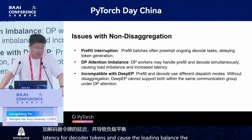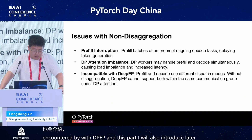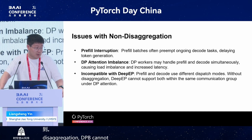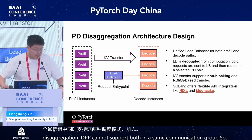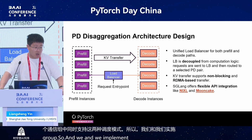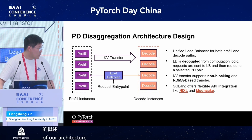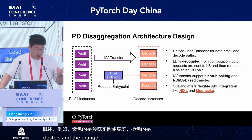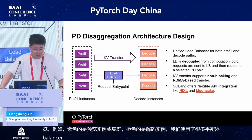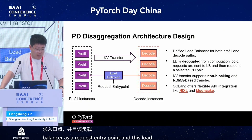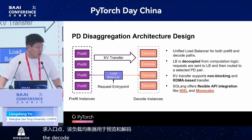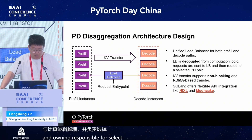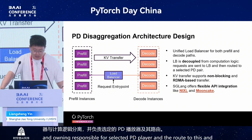A third issue is encountered with DP-EP. Prefill and decode usually use different dispatch modes, and without disaggregation, DP-EP cannot support both within the same communication group. In our PD disaggregation architecture, the purple nodes are prefilling instances and the orange ones are decoding instances. We use a load balancer as the request entry point for both prefill and decode paths. The LB is decoupled from computation logic and is only responsible for selecting a PD pair and routing the request.